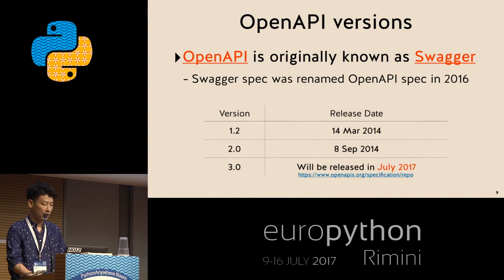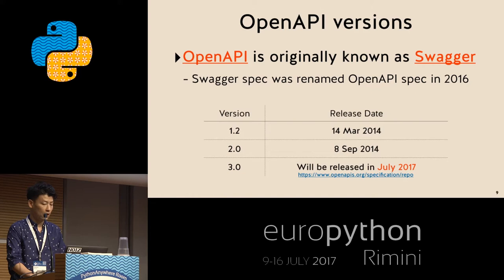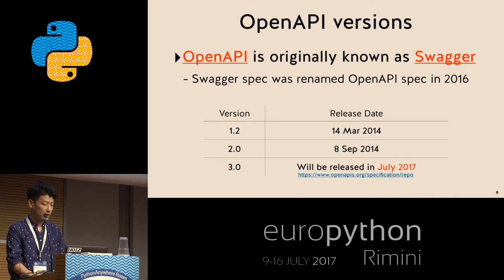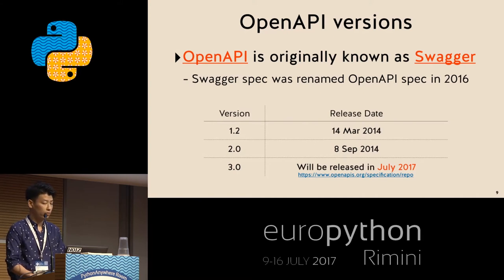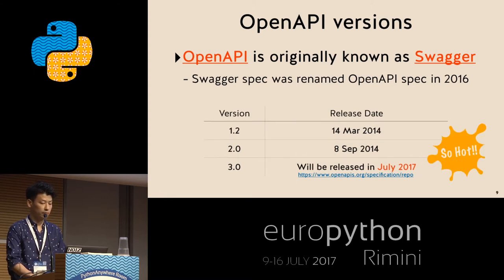There are several versions of OpenAPI. As I said, OpenAPI is originally known as Swagger and was renamed in 2016. Version 1.2 and version 2.0 were released in 2014 and known as Swagger. The new major version 3.0 was planned for release in January 2017 — so this month, maybe next week. It's very hot technology.